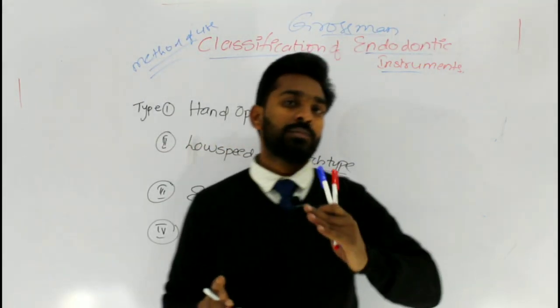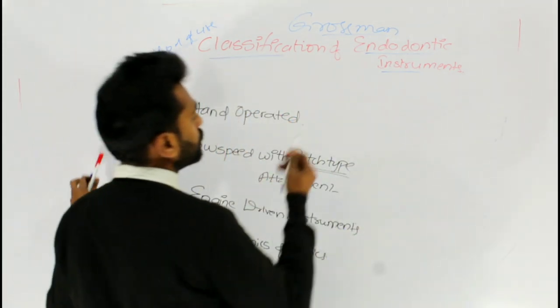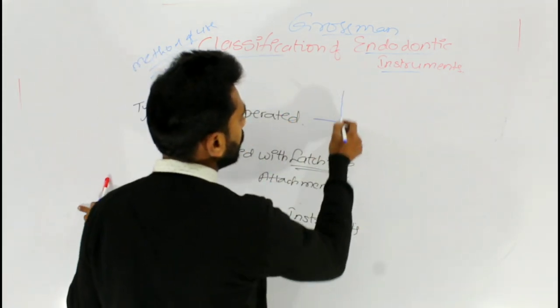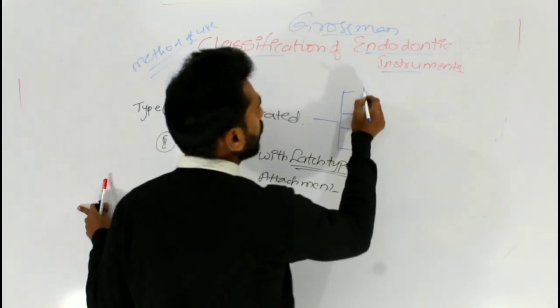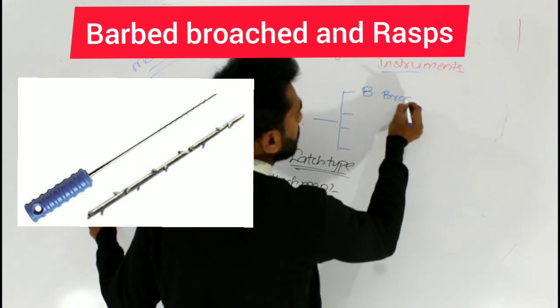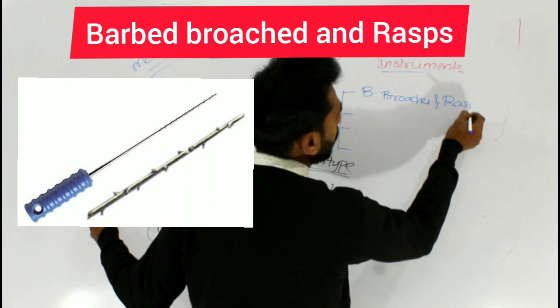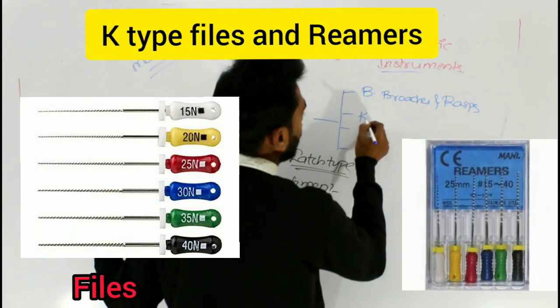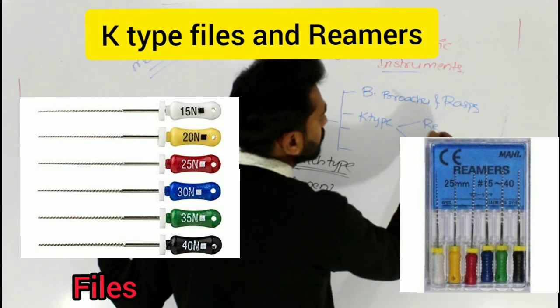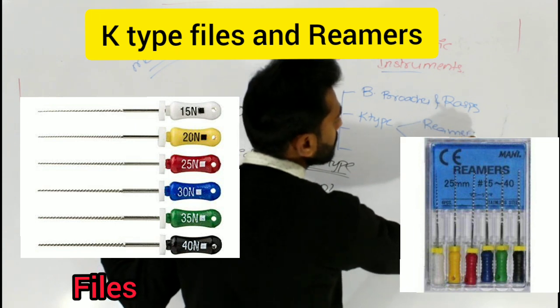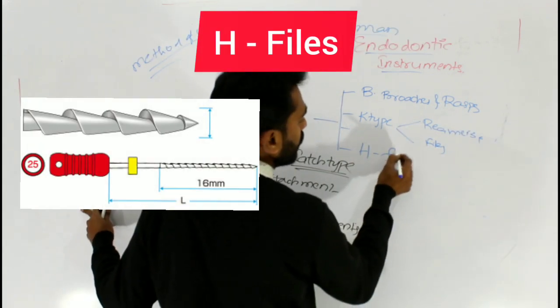Now let's see what are the different types of instruments available in each category. Coming to the hand-operated instruments, you can see mainly four types: barbed broaches and rasps, K-type reamers and files, and H-files.